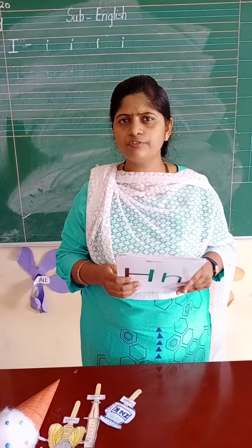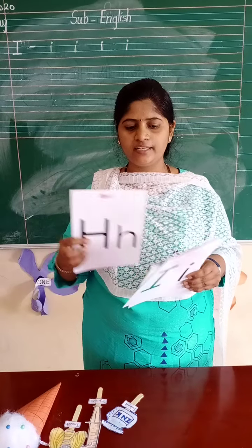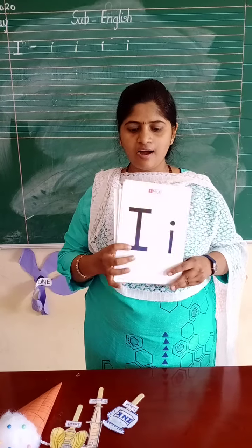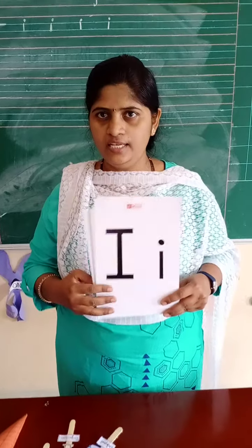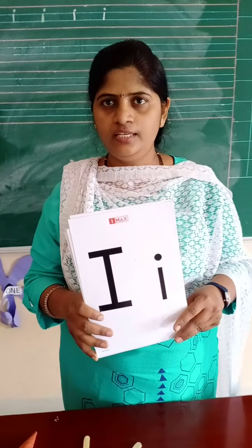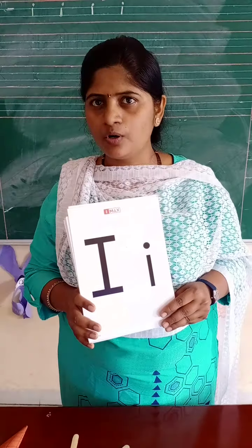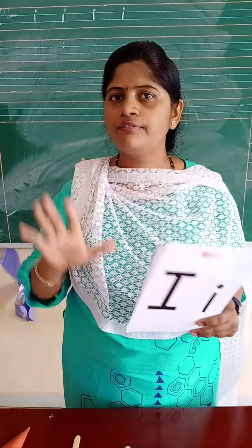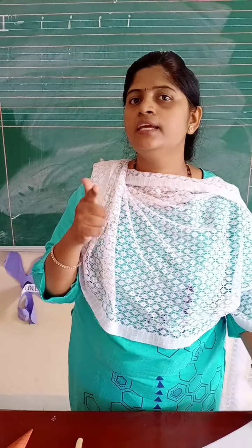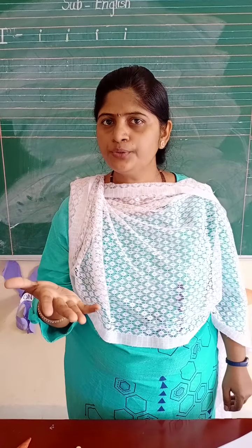After H, which letter comes? Yes, I. See here, letter I. Capital I, small i. I makes sound? E. And do you know, children? I is a special letter — a vowel. How many vowels are there? Five vowels: A, E, I, O, U. And I is the third vowel.